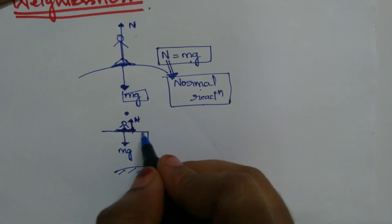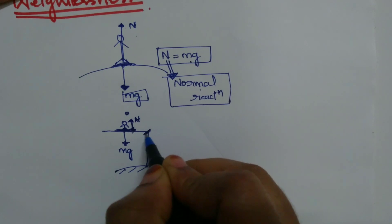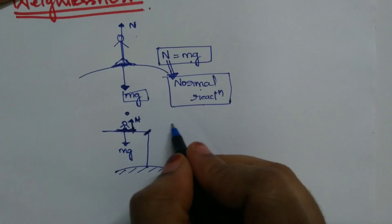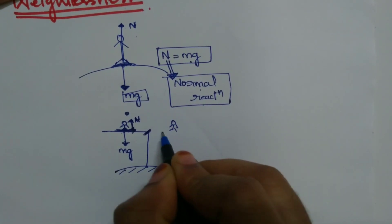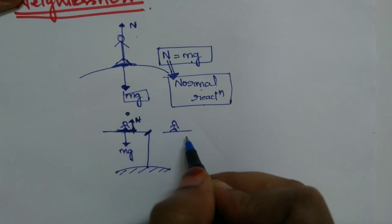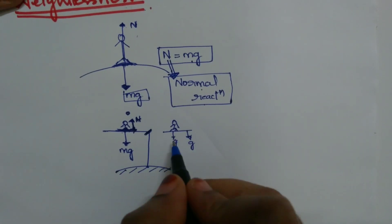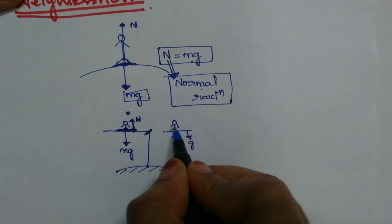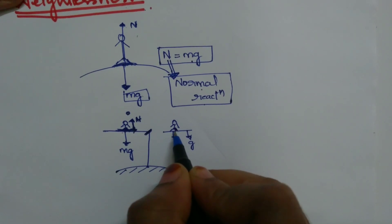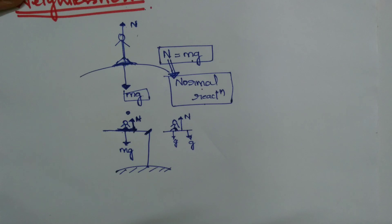Now let us consider another example. If this platform is disjoint — now at this point, you and the platform are under freefall. Since you and the platform are moving with the same acceleration, that is g, you are not pressing the surface. Since you are not able to press the surface, there is no normal reaction back at you.